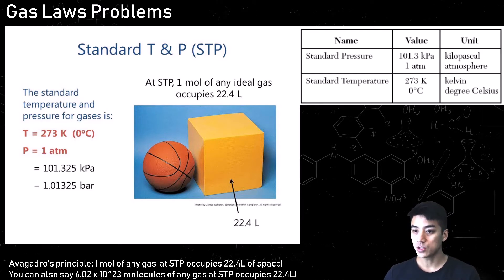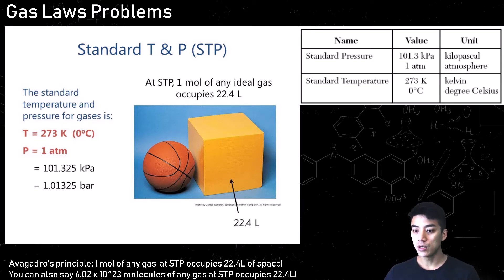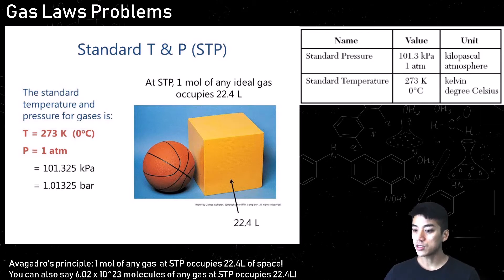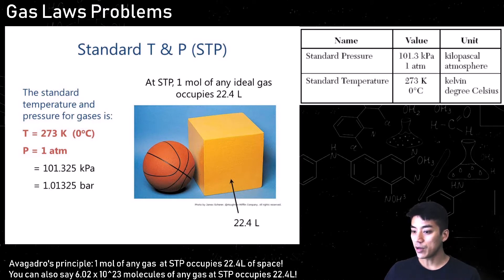So that's what standard temperature and pressure means. Under those conditions, 1 mole of any gas will occupy 22.4 liters of space. It's roughly a little bit bigger than a basketball. That picture shows a basketball next to a cube — that cube is 22.4 liters. So 1 mole of any gas will take up 22.4 liters under standard temperature and pressure.